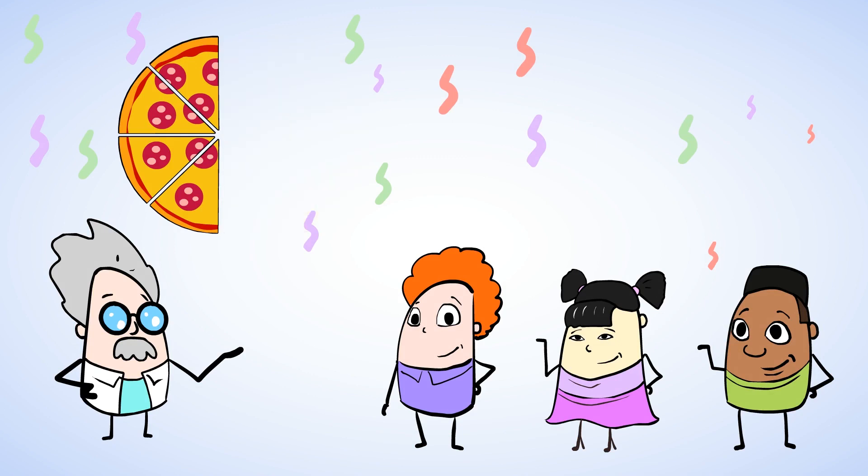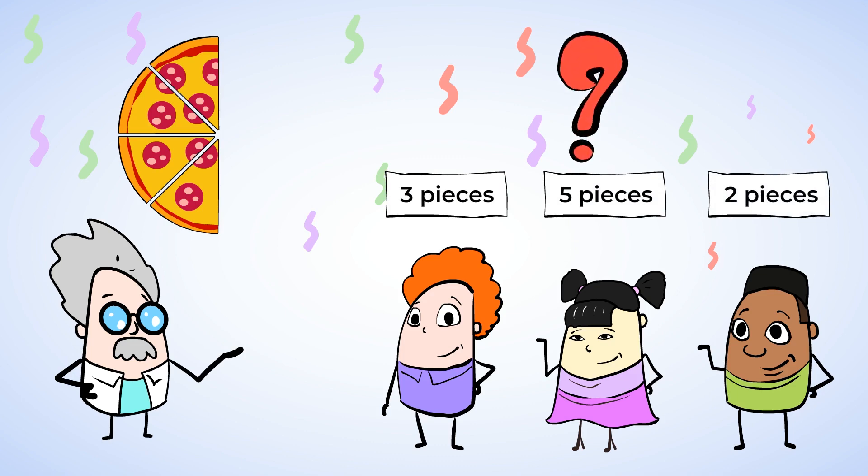Now they each eat half of a pizza. All of the pizzas are the same size, but Tim ate three pieces, Courtney ate five pieces, and Juan ate two pieces. How is that possible?